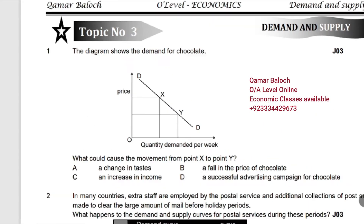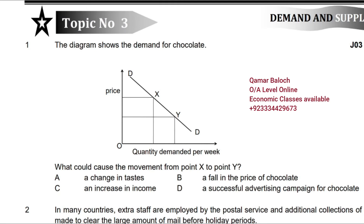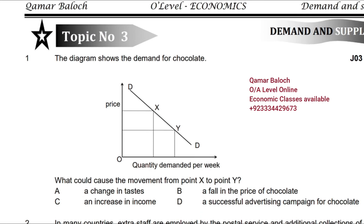The topic is demand and supply. Question number one: the diagram shows the demand for chocolate — what would cause the movement from point X to point Y? The examiner is asking about movement from one point to another, and this movement is along the same demand curve. You can see it is happening because of a fall in price.